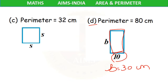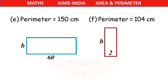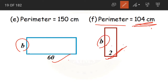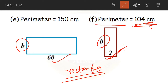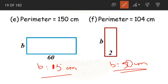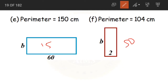This is how we use the formula of perimeter of square and rectangle to find out the missing lengths. These two remaining problems are for your homework — please try solving them at home. For one problem the perimeter is 150 centimeters with length given and breadth missing; for question F the perimeter is 104 centimeters. Both are rectangles. The answers are: breadth equals 15 centimeters, and for question F, breadth equals 50 centimeters.